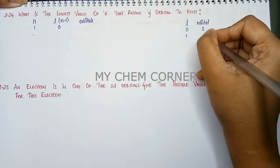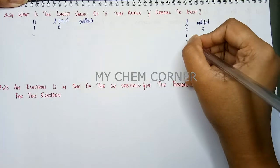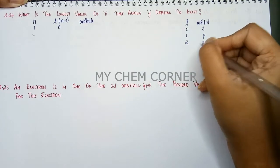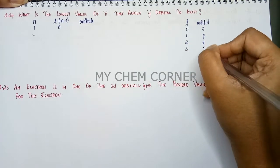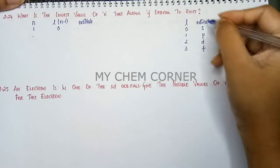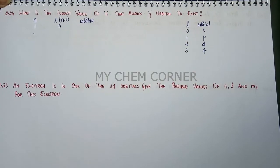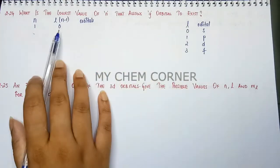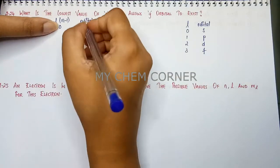When l equals 1 orbital is p. l equals 2 orbital is d and l equals 3 orbital is f. This you should know how to write it or how to identify it. So here when l equals 0 the orbital here is s.